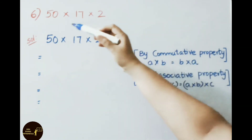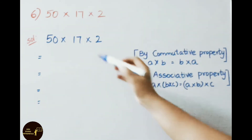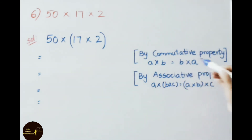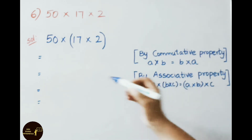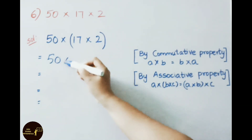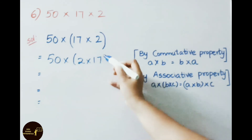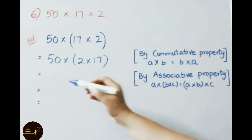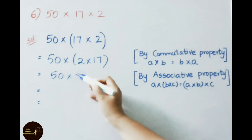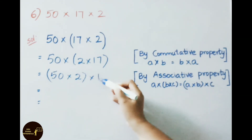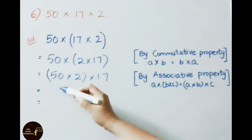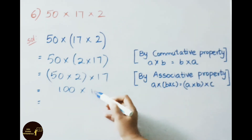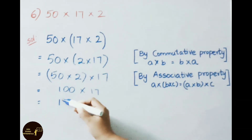Let us see the sixth sum: 50 into 17 into 2. For these two numbers I am going to apply the commutative property: A into B can be written as B into A. Write down 50 into 2 into 17. This looks like associative property: (A into B) into C. So (50 into 2) into 17. 50 twos are 100, into 17. 100 into 17 equals 1700.